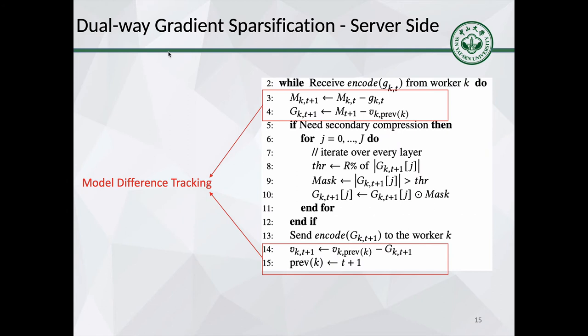In the server side, in order to track model difference of each worker, the server must obtain the accumulation of every update and what has been sent. So the server can subtract the two values and get the model difference, capital G. After that, we can compress model difference by sending only the top K percent values of each layer.